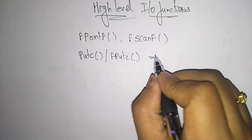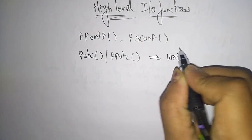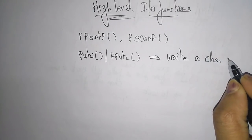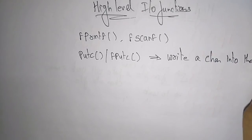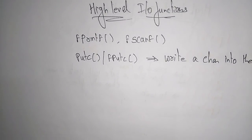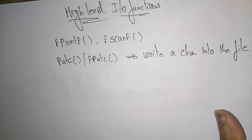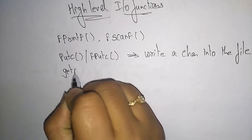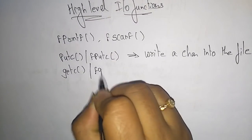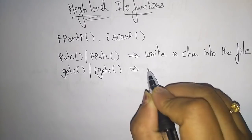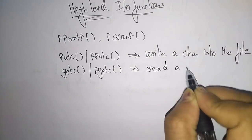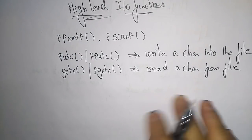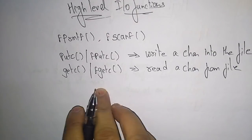Next, coming to putc or fputc — both are the same. These putc or fputc are used to write a character into the file. Next is getc or fgetc, which is used to read a character from a file. To read a character from a file, you use getc or fgetc.